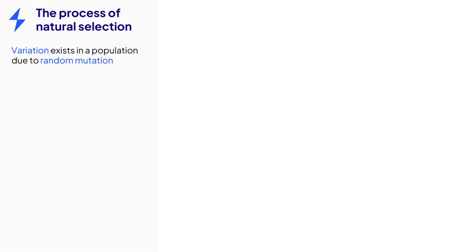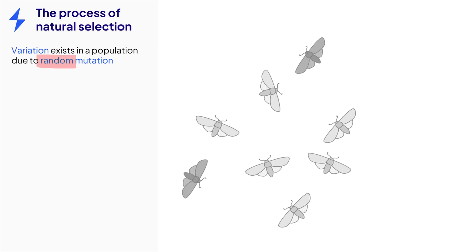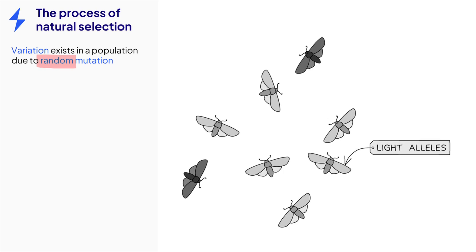The process of natural selection involves a series of stages. In order for natural selection to occur, variation must exist between the genes of individuals in a population. It is essential to note that this variation is the result of random mutation, which does not occur in response to any factor in the environment. For example, in this moth population, some moths have alleles which code for light colour, while some have undergone random mutation to gain alleles which code for dark colour.